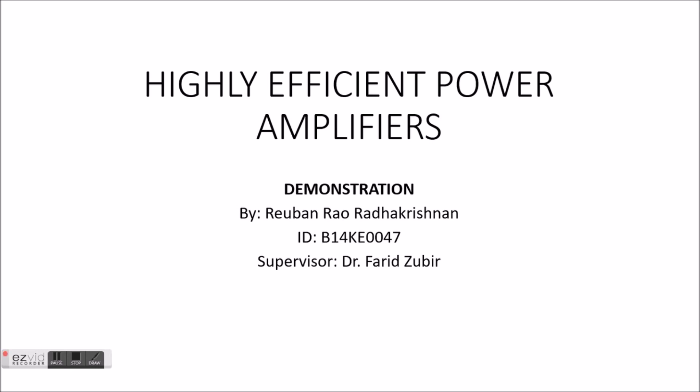Class E amplifiers could achieve efficiencies far greater than any conventional amplifier could provide. At best, a conventional amplifier such as Class A could only provide efficiencies up to 50%. On the contrary, a Class E amplifier could provide efficiencies up to 100%, almost twice more efficient than Class A.